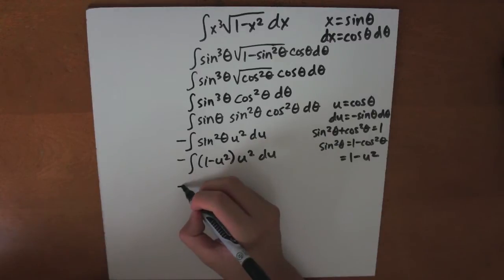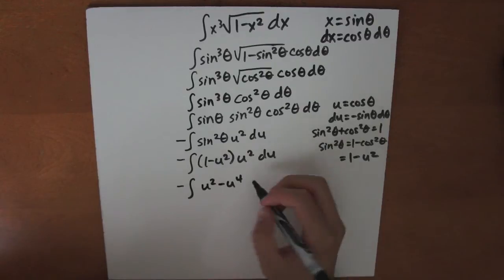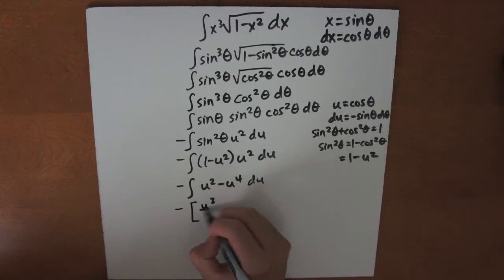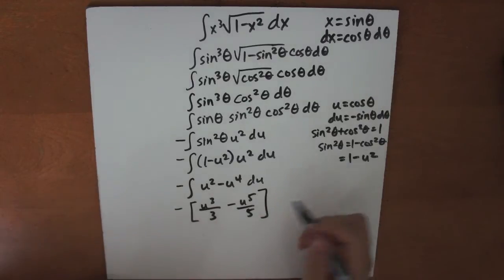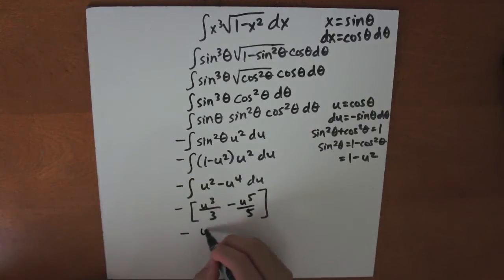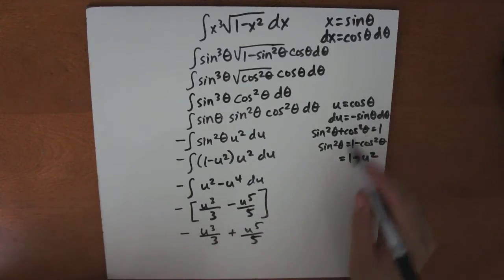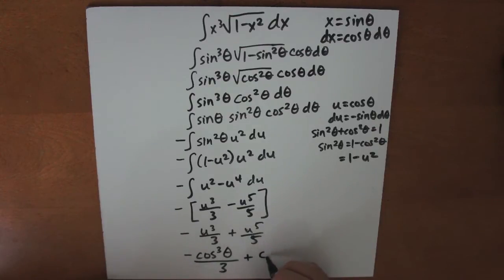Now let's solve the integral. So we get minus the integral of u squared minus u to the fourth du. Evaluating this, we get minus u cubed over 3 minus u to the fifth over 5. Simplifying, we get minus u cubed over 3 plus u to the fifth over 5, where u equals cosine theta. So plugging that back in, we get minus cosine cubed theta over 3 plus cosine to the fifth theta over 5.